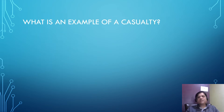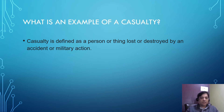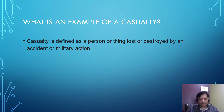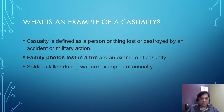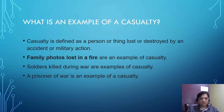What is an example of a casualty? A casualty is defined as a person or thing lost or destroyed by an accident or military action. Examples include family photos lost in a fire, soldiers killed during war, and a prisoner of war.